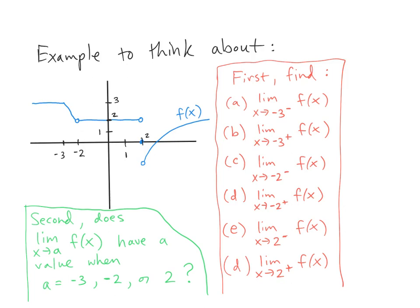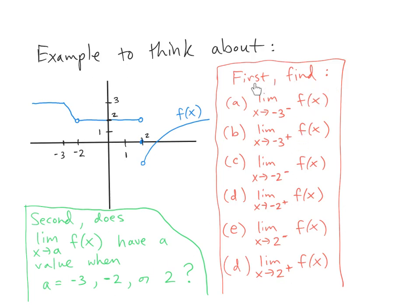To end the video, here's an example to think about. Here's the graph of a function. First, look at the right and left-hand limits and determine their values. Then ask whether the two-sided limit exists at each of the three values: negative 3, negative 2, and 2. Consider each separately, look at those limits, and see whether they have a value according to the definition given. Do the left-hand and right-hand limits for each point, then turn to the question of the two-sided limits.